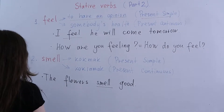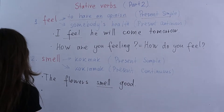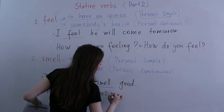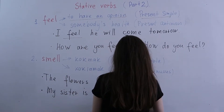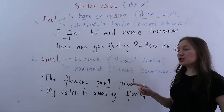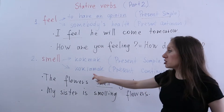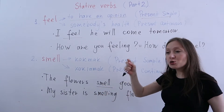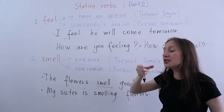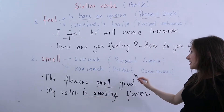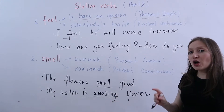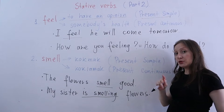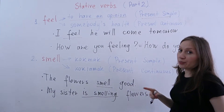The next example: 'My sister is smelling flowers.' She is doing the action of smelling right now, that's why we use present continuous — 'is' plus verb ING. From the sentence you can understand the meaning, and depending on that meaning you change the tense: simple or continuous.